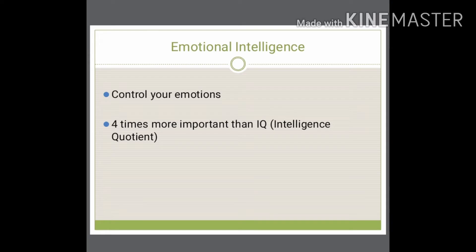When you identify your emotions, how do you control them? And when others display their emotions, how do you react to them? Controlling one's emotions is very important. Research suggests that emotional intelligence is four times more important than intelligence quotient in determining life success.